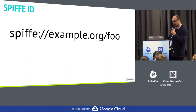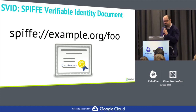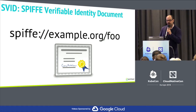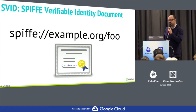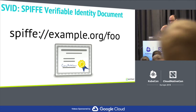A SPIFFE ID is encoded in an X.509 certificate — that was the first identity document the community came up with. It describes what goes into an X.509 certificate and what extensions we're using. We didn't want to create our own ASN.1 extensions because we wanted to make SVIDs as consumable as possible, so we work with most TLS stacks. In our SIG group that works on the SPIFFE specification, we are working on JWT SVIDs — that's the next identity document for HTTP-based protocols.